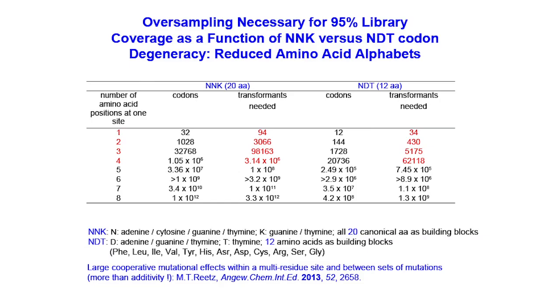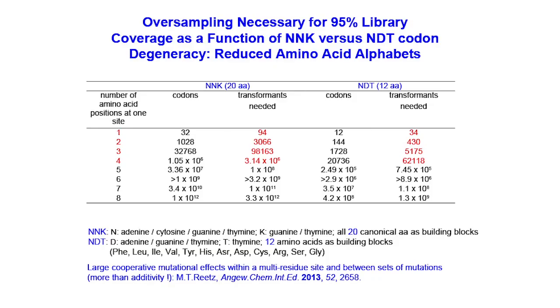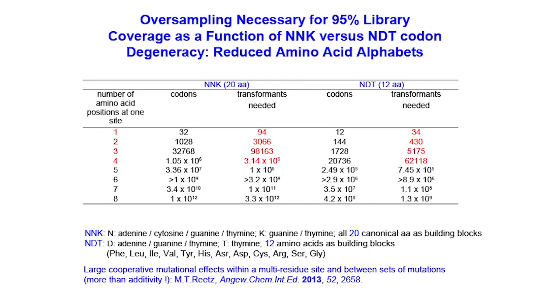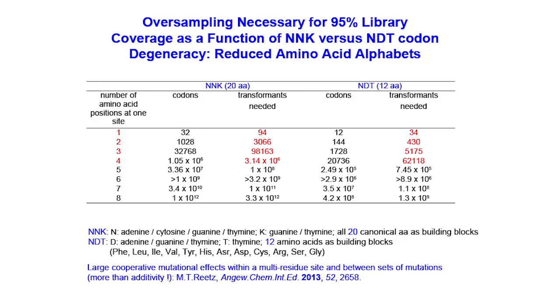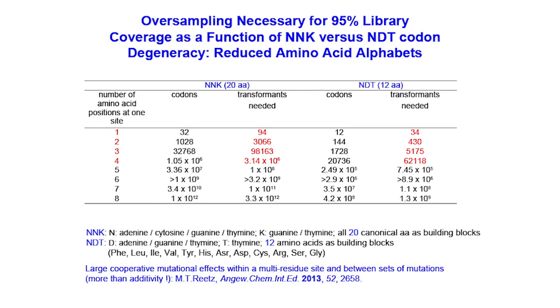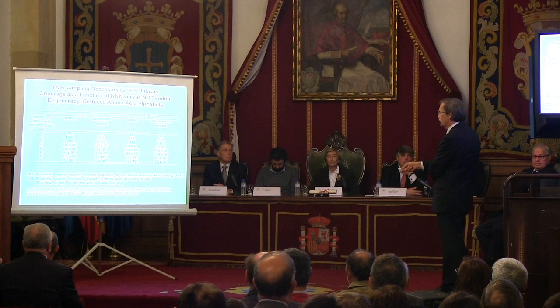I need to confront you with some statistical aspects. Let's focus on so-called NNK codon degeneracy — simply, we're using the 20 naturally occurring amino acids as building blocks at a certain site. For a site composed of two amino acid positions, our calculations show that for 95% library coverage we should screen 3,000 variants. For a four-amino-acid site it's 100,000, and for five amino acids it's three million. This is a statistical problem connected with the screening question.